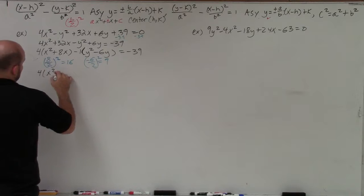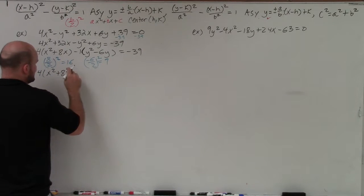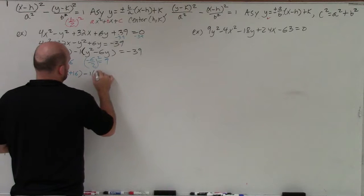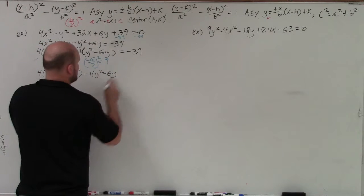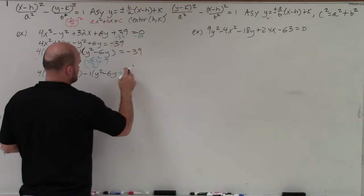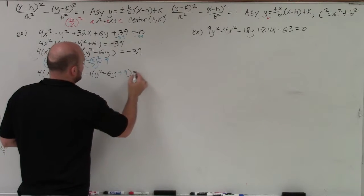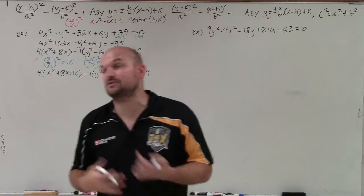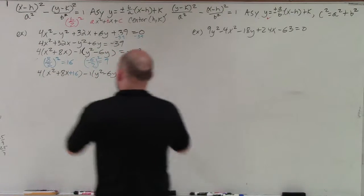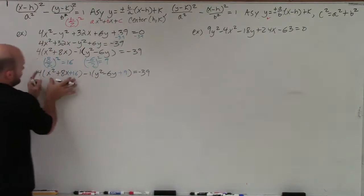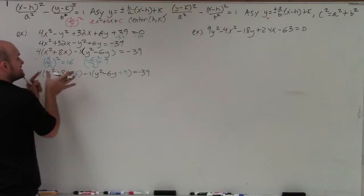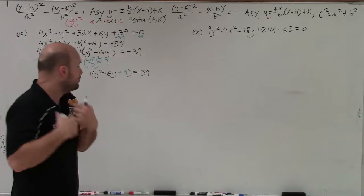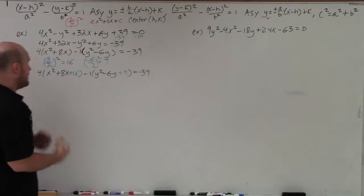So I have 4 times (x² + 8x + 16) minus 1 times (y² − 6y + 9) equals negative 39. Remember, whatever you do on one side you have to do on the other side. I added these values inside to create perfect square trinomials, and now I can factor them down to binomials squared.